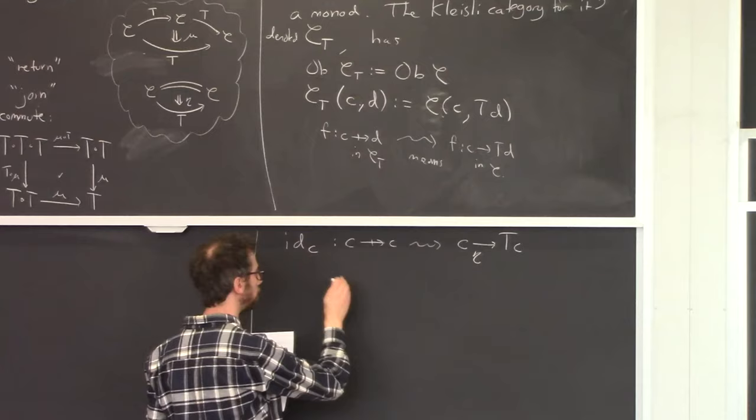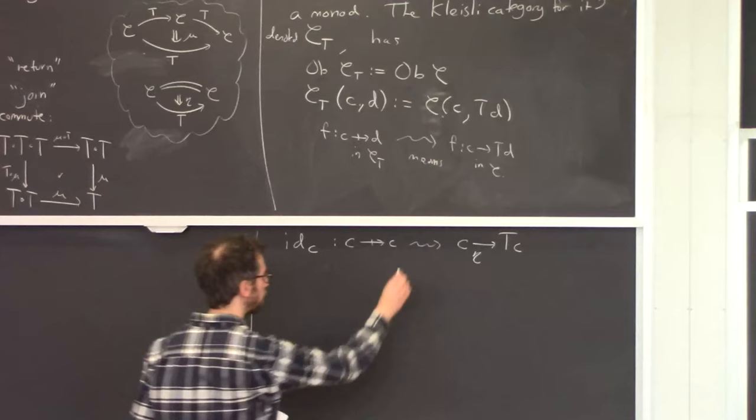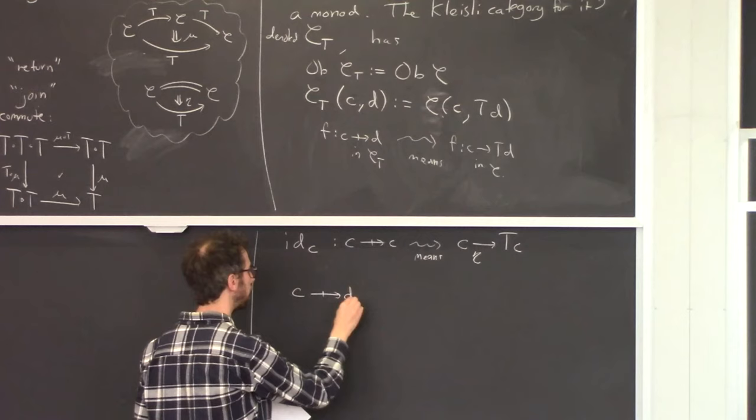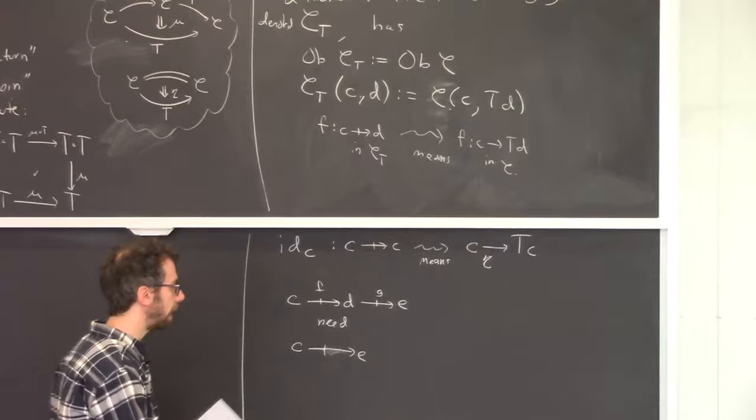The identity id_C is eta — the return. That makes sense: I need something from C to T(C), and I've got it because I've got a monad. And I also need, given a map from C to D and a map from D to E, a map from C to E.